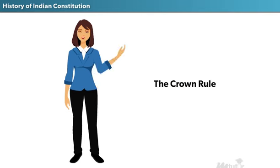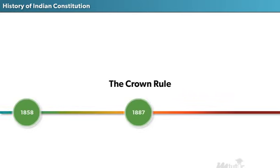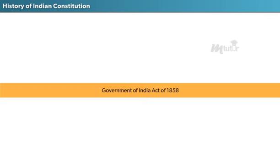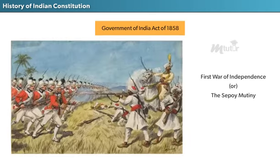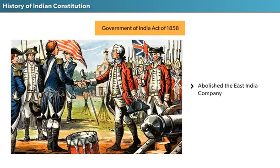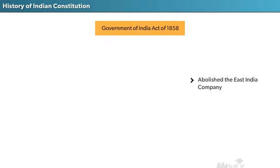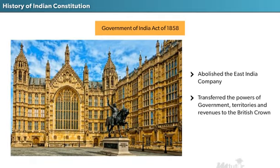The next set of Acts is called the Crown Rule, formulated in the span of 1858 to 1947. The first Act is the Government of India Act of 1858, enacted in the wake of the revolt of the 1850s — also known as the First War of Independence or the Sepoy Mutiny. This Act abolished the East India Company and transferred the powers of government, territories, and revenues to the British Crown.